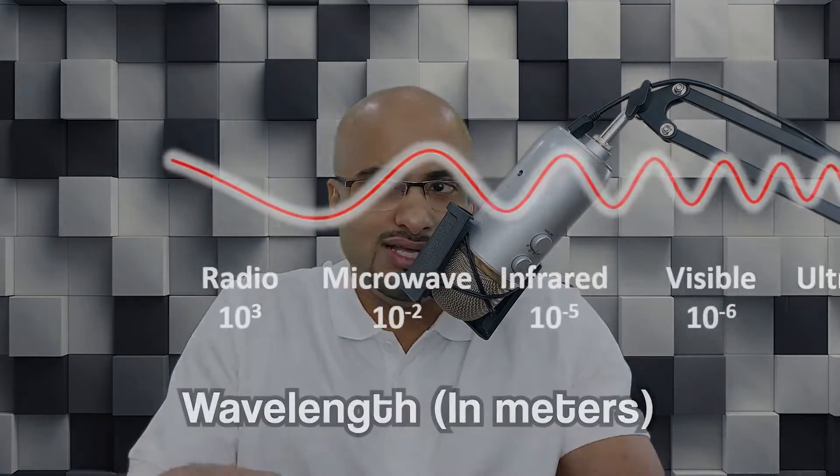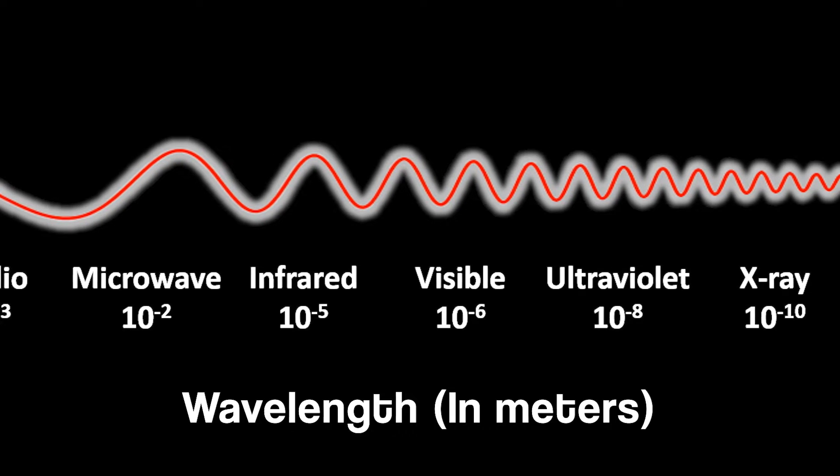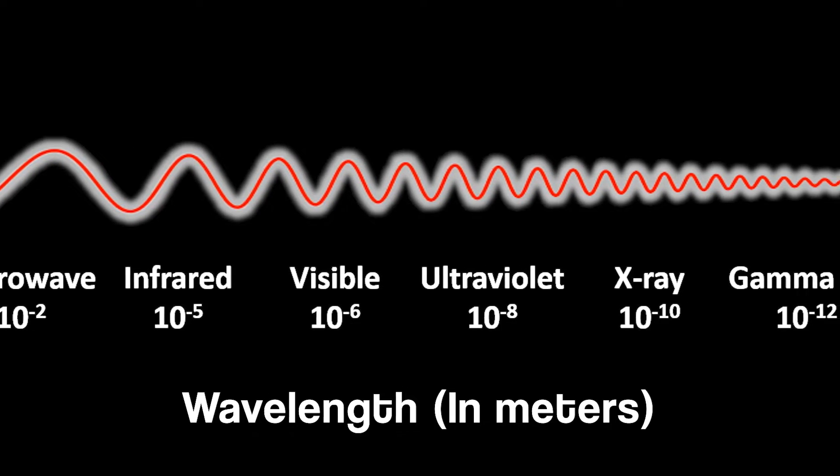When people say light, they mean visible light. But visible light is part of the electromagnetic spectrum, and all of that uses photons to propagate, all the way from radio waves to gamma rays.